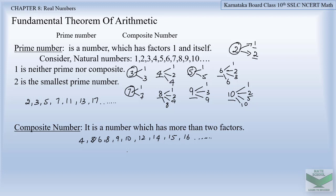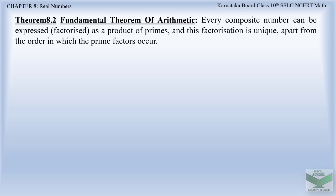I am sure you must have understood what a prime number is and what a composite number is. Coming to theorem 8.2, which is the fundamental theorem of arithmetic: it states that every composite number can be expressed as a product of primes, and this factorization is unique apart from the order in which the prime factors occur. To understand this, let us take an example — a composite number, let it be 10. We already know that 10 is a composite number because it has factors more than 2: it has factors 1, 2, 5, and itself.